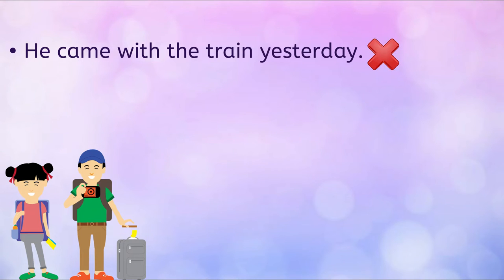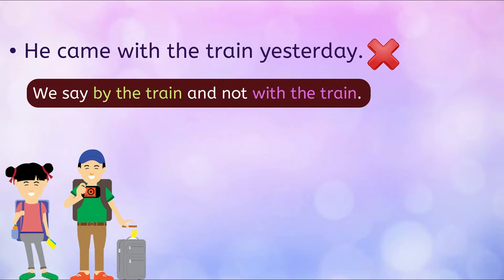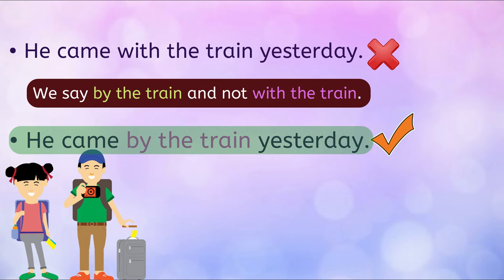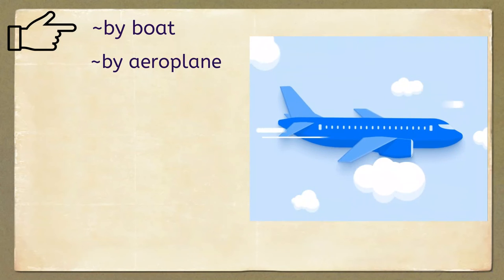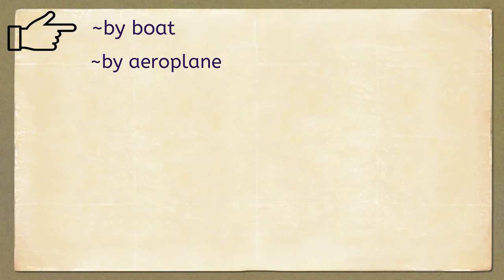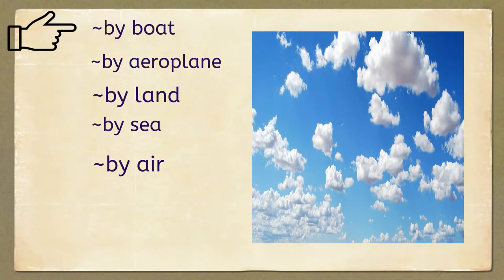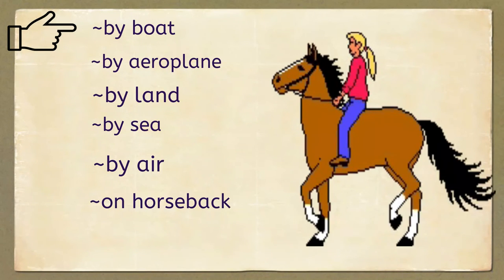The next one is: 'He came with the train yesterday.' It is an incorrect sentence. We say 'by the train' and not 'with the train.' Please repeat the correct sentence after me: He came by the train yesterday. Please note we say 'by boat,' 'by aeroplane,' and also 'by land,' 'by sea,' 'by air,' 'on horseback,' 'on foot.'